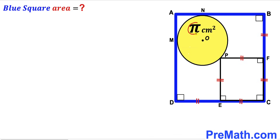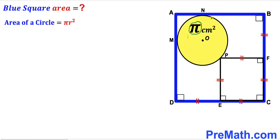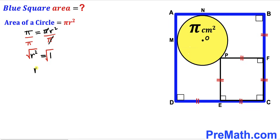The area of the yellow circle is given as π centimeter square, and we are going to calculate the radius, labeled as lowercase r. Recalling the area of a circle formula, area equals π r squared. Since area equals π, we get π equals π times r squared. Dividing both sides by π gives r squared equals 1, and taking the square root gives r equals positive 1 centimeter.